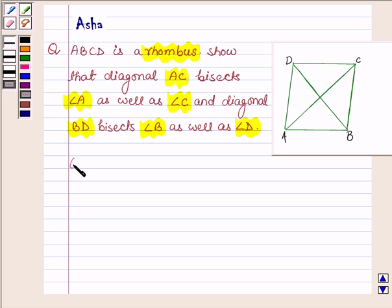So firstly just write what we are given. So here we are given a rhombus ABCD. That is, all the four sides of a rhombus are equal. Therefore we have AB is equal to BC is equal to CD is equal to DA.